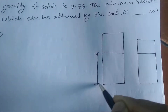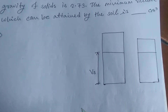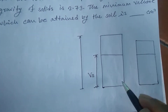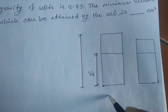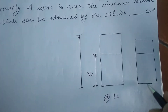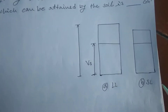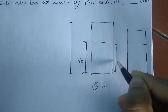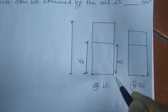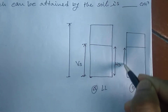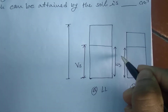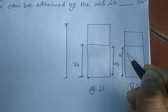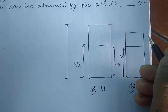Here we have VS, volume of solid. Here we have total volume. A is the liquid limit, B is the shrinkage limit. We also have WS, weight of solid, at the shrinkage limit and liquid limit points.